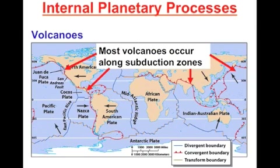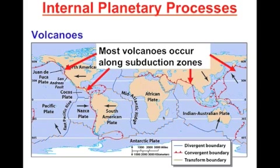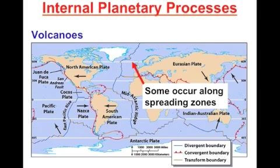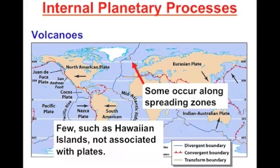Volcanoes are likely to happen in one of three spots. They can typically happen in subduction zones, which form an area called the Ring of Fire — a ring of volcanic activity that occurs along the Pacific. Volcanoes can also occur in areas of spreading plates, as well as areas known as hot spots. An example of a hot spot would be the Hawaiian Islands.